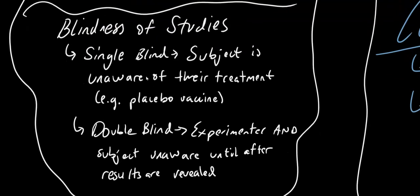Studies can also be used single-blind or double-blind. In a single-blind experiment, the participants don't know which side of the experiment they're on. For example, in a vaccine study, participants might not know if they got a placebo or the real thing. This eliminates some bias and mistaken results.